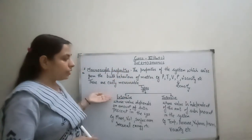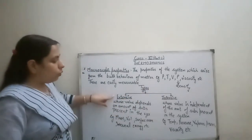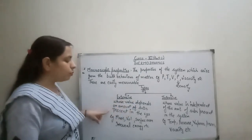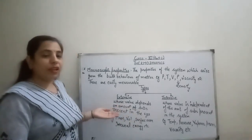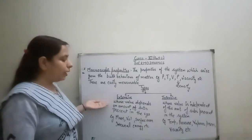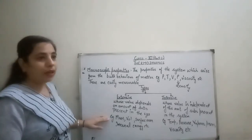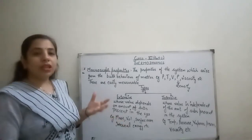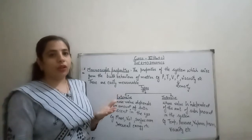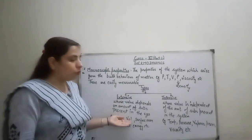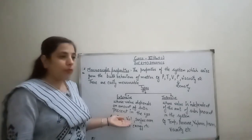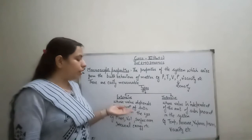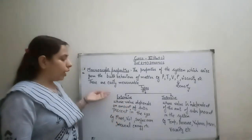Macroscopic properties are further of two types: extensive properties and intensive properties. Extensive properties are those whose value depends on the amount of substance present in the system. For example, if there is 5 kg or 10 kg of a substance, its mass depends on the amount. Similarly, if there is more substance it will occupy more volume, and less substance will occupy less volume. So properties that depend on the amount of substance in the system are known as extensive properties.